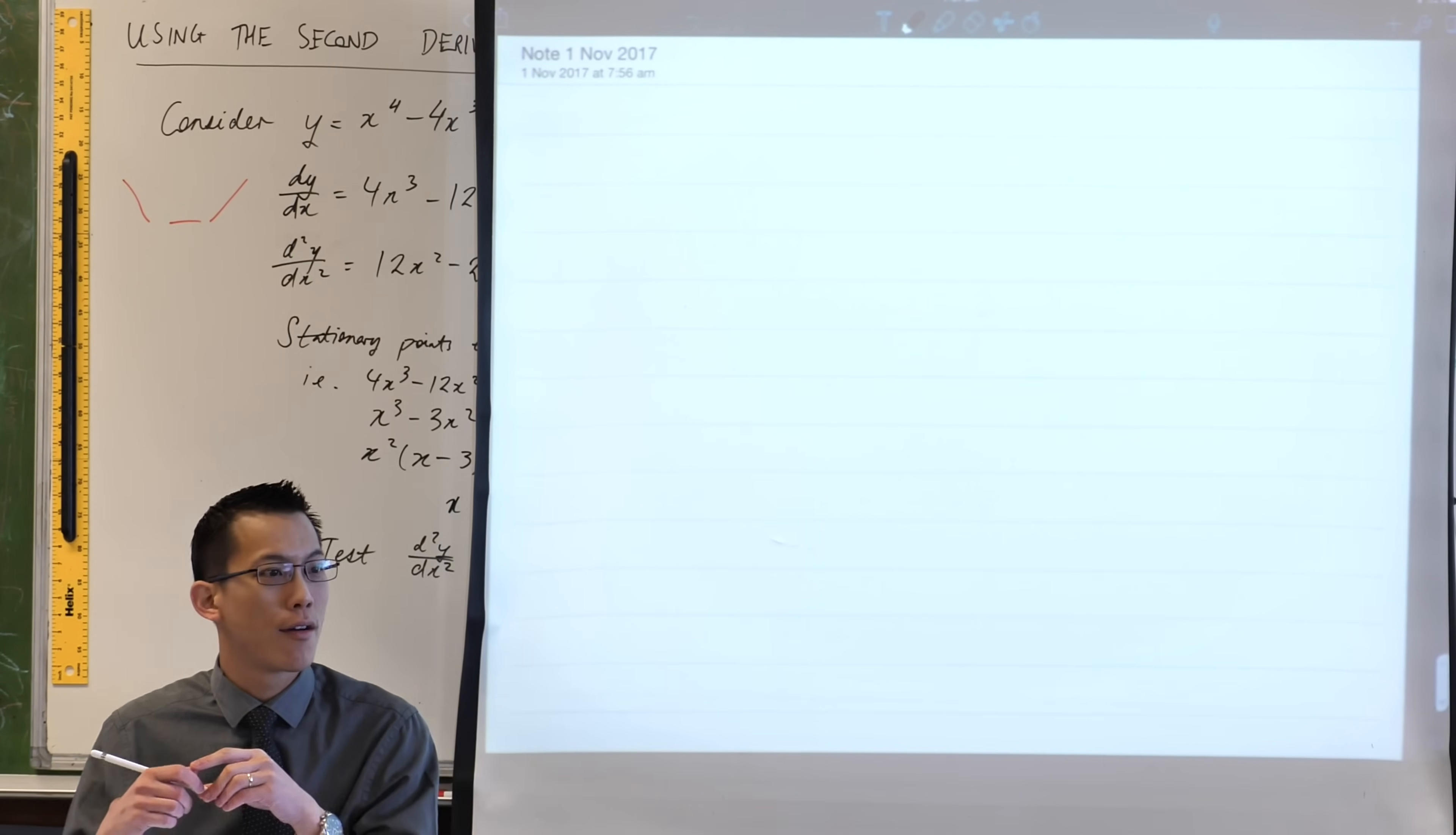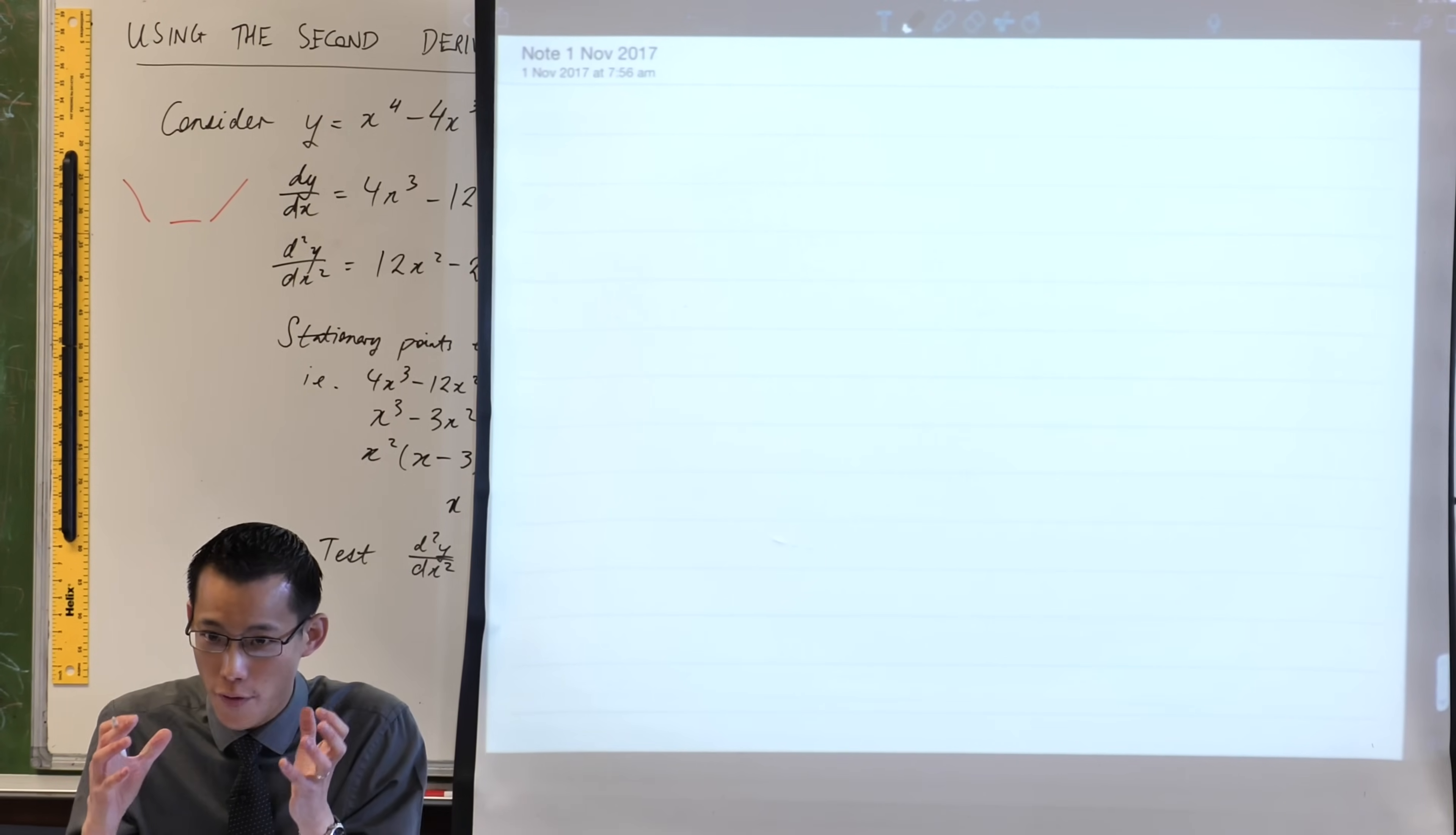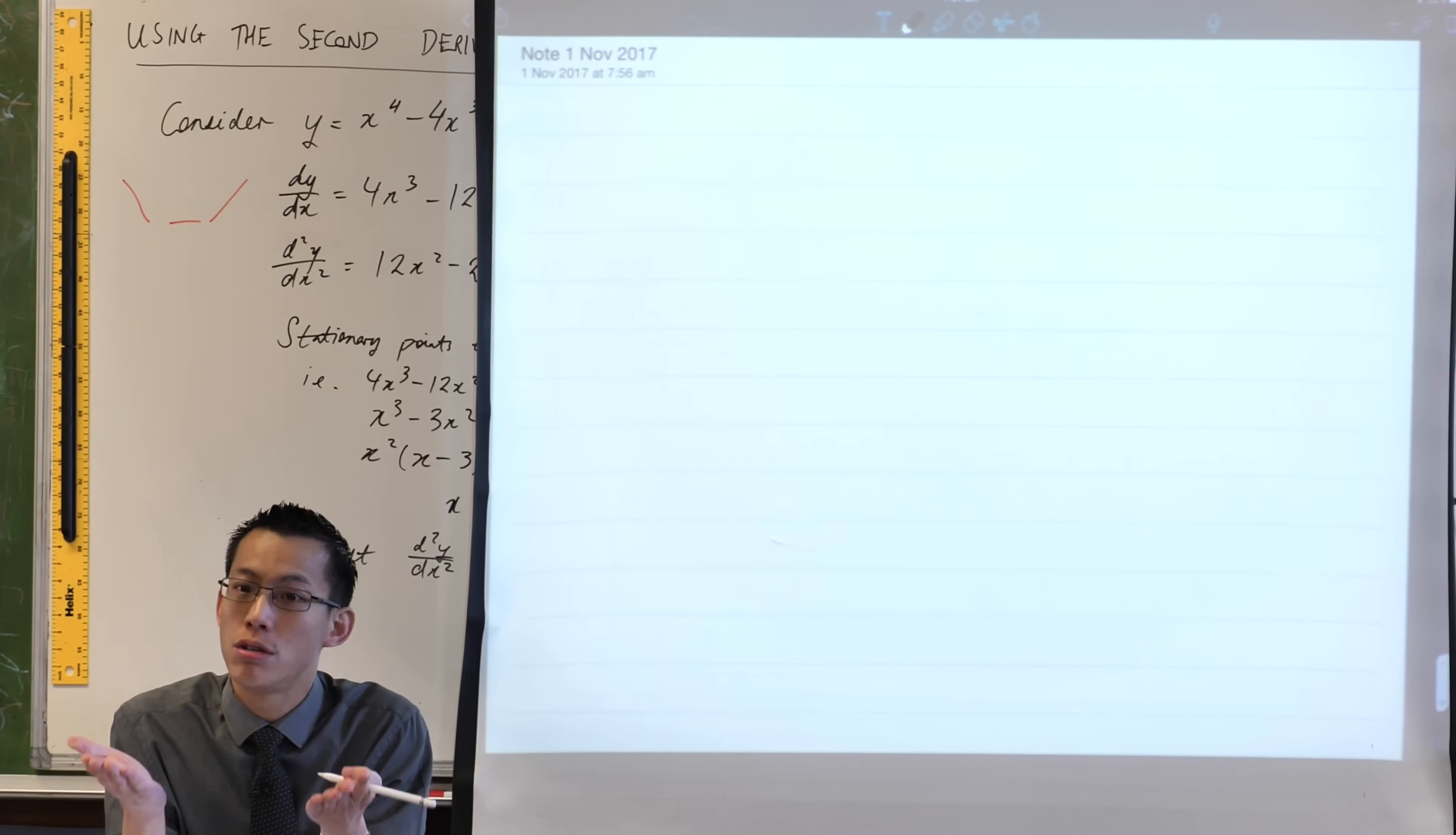Right, so our heading is flowchart for stationary points. What I want to do is map out for you - you now know a lot of information and enough skills to actually make some choices.